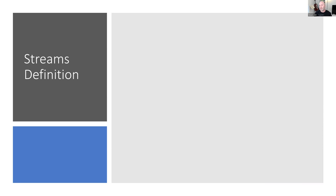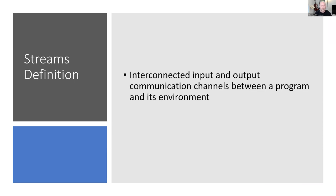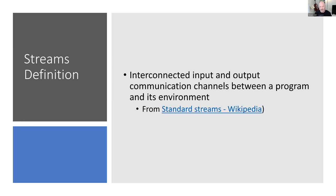Let's talk about what streams are. We need a good definition in order to understand what we're talking about. A stream is an interconnected input and communication channel between a program and its environment. That's a definition from Wikipedia — I don't actually talk like that.